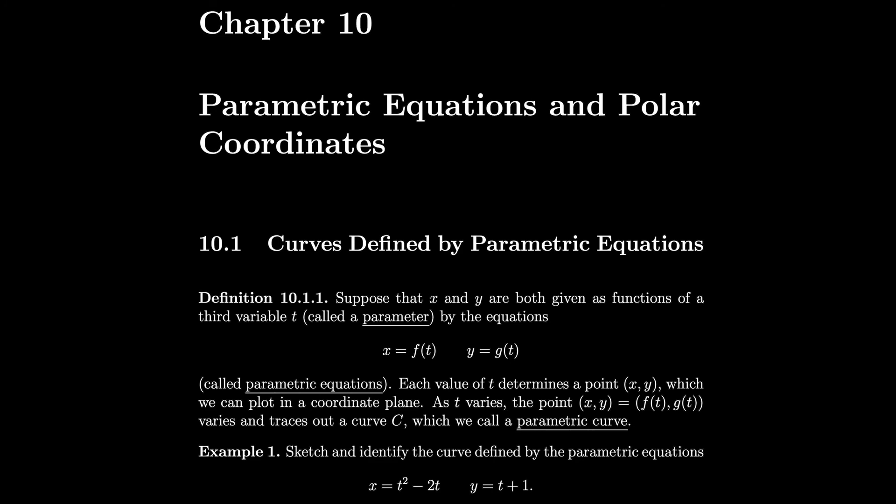Chapter 10: Parametric Equations and Polar Coordinates, Section 10.1: Curves Defined by Parametric Equations. Suppose that x and y are both given as functions of a third variable t, called a parameter, by the equations x equals f of t and y equals g of t, called parametric equations. Each value of t determines a point x, y which we can plot in a coordinate plane. As t varies, the point x, y equals f of t, g of t varies and traces out a curve C, which we call a parametric curve.